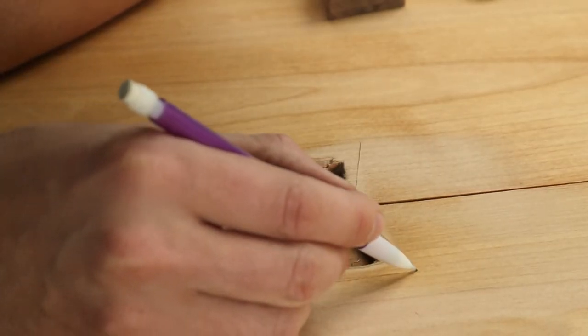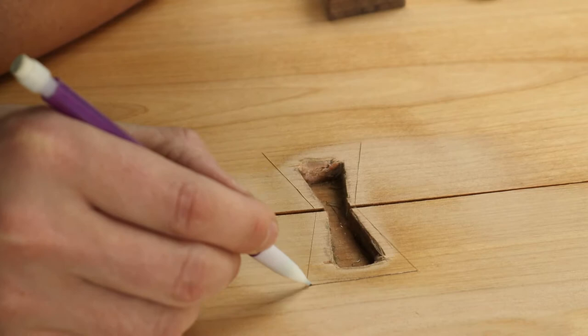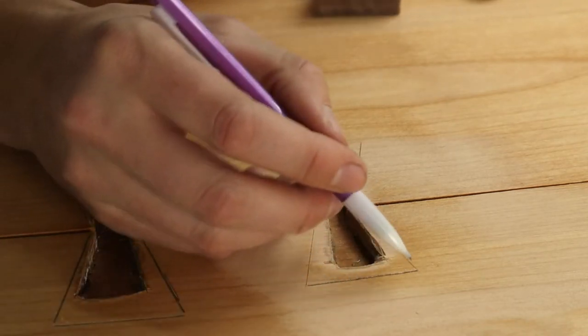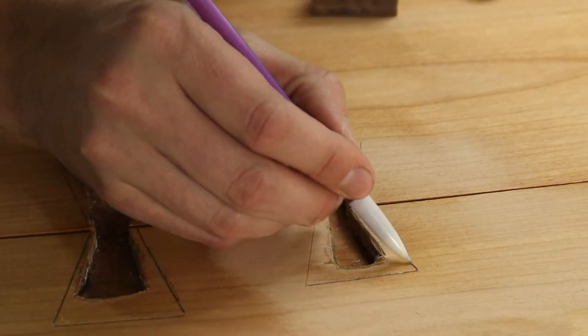It's really helpful to trace your cut line. You want to make it as dark as possible because when you are routing out the waste, it gets hard to see where that line is.